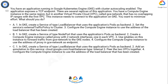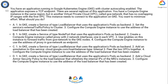Option C: In GKE, create a service of type LoadBalancer that uses the application's pods as backend. Add an annotation to this service: cloud.google.com/load-balancer-type: Internal. Peer the two VPCs together. Configure the Compute Engine instance to use the address of the load balancer that has been created.